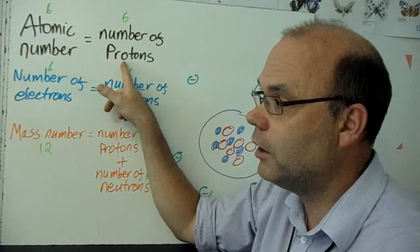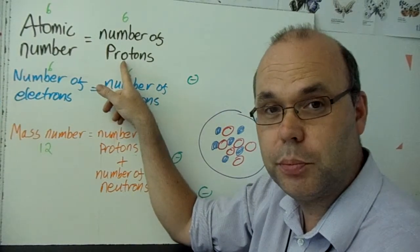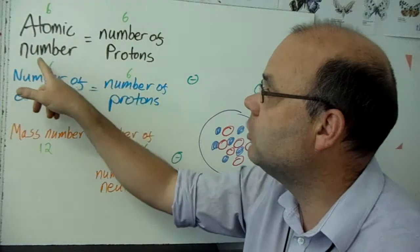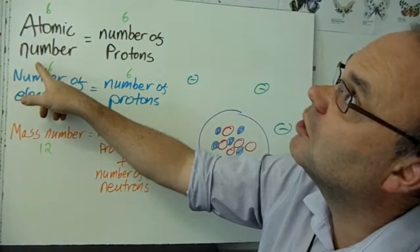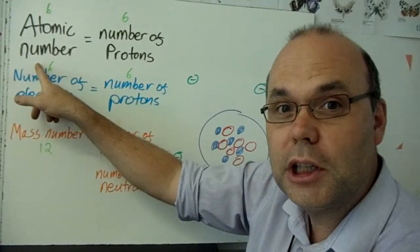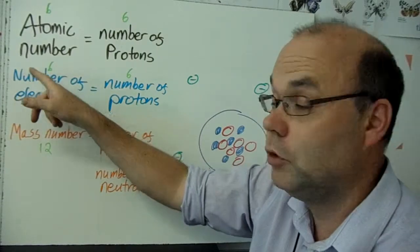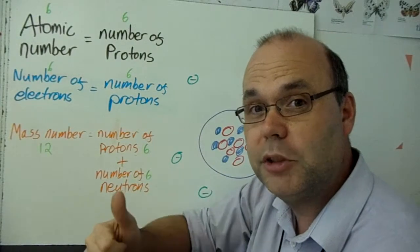So in our atom, we've got six protons, right? That means our atomic number is six, which means we've got a carbon atom. Because if you look at your periodic table, number six is carbon.